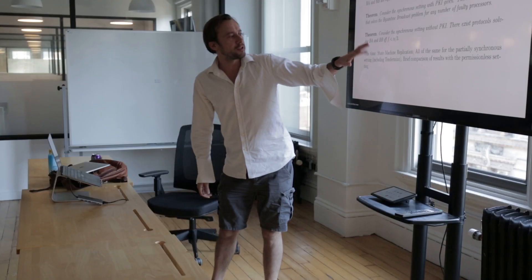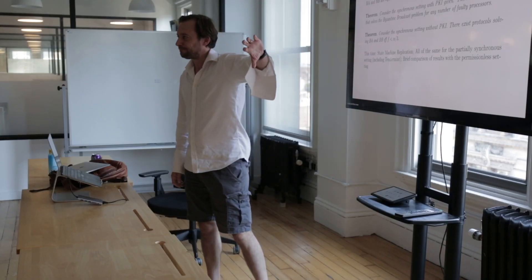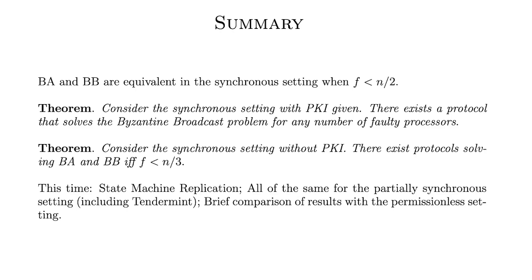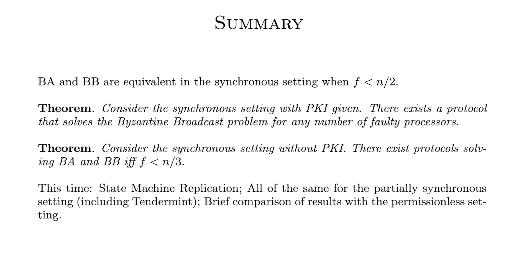Here's the plan for today. We'll stay in the synchronous setting for a bit and look at state machine replication, which is basically what blockchain protocols do. Then we'll introduce the partially synchronous setting and essentially redo the analysis, but more briefly — I'll show you Tendermint, which will do most things for us. At the end, we'll briefly compare permissioned protocols with the permissionless setting, like Bitcoin.